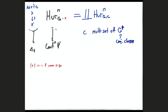In general, these Hurwitz spaces are stacks, not schemes — our reference is Stefan Weber's thesis. An object like a cover X → P^1 with a marked automorphism can have automorphisms, which is why it's a stack rather than a scheme; those automorphisms are the center of G. So if G is centerless, you get a scheme. In general, you get stacks here.